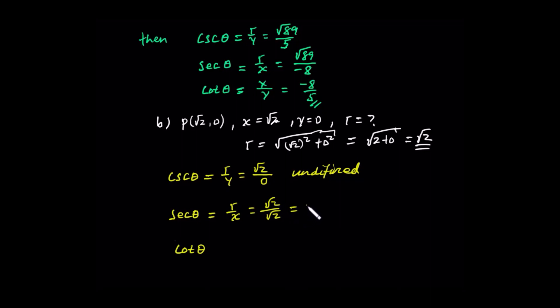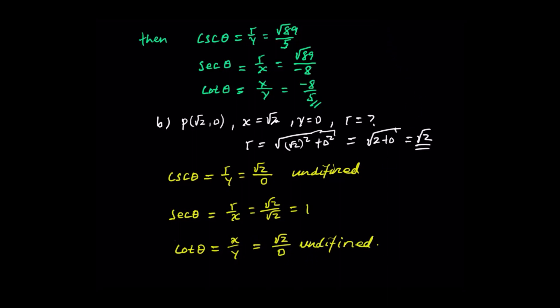Next, cotangent. Cotangent is x over y, the reciprocal of tangent. Tangent is y over x. So cotangent is x over y: x is root 2, y is zero. This is also undefined. So when the terminal side of angle theta passes through the point P with coordinate (2, 0), cosecant and cotangent are undefined.